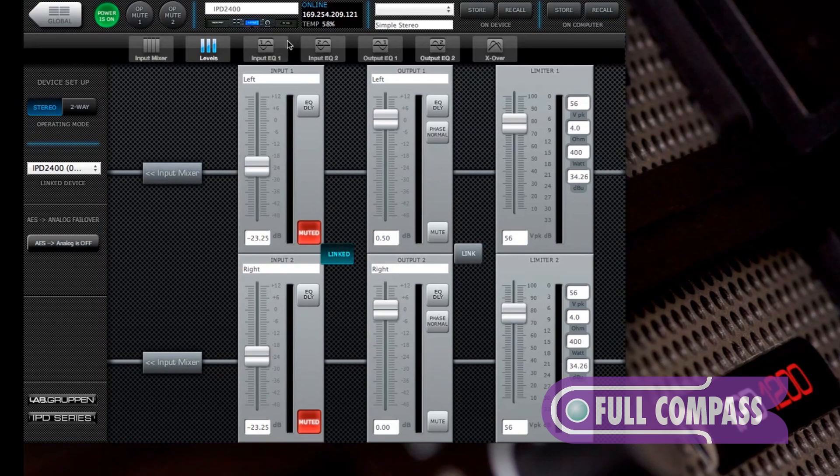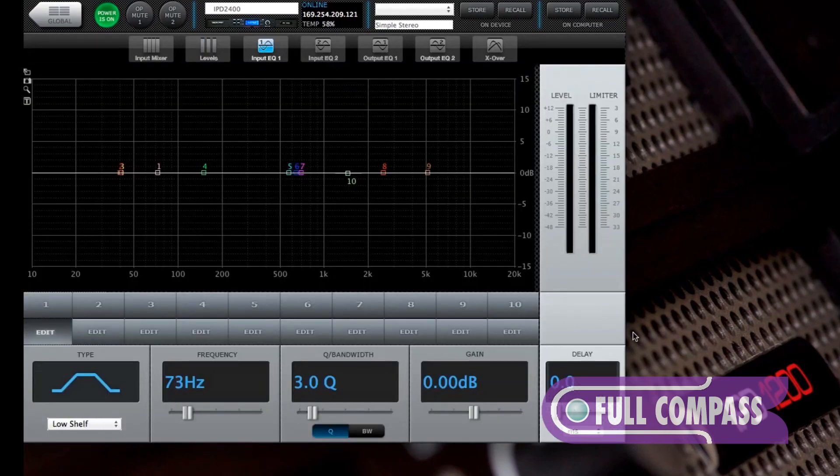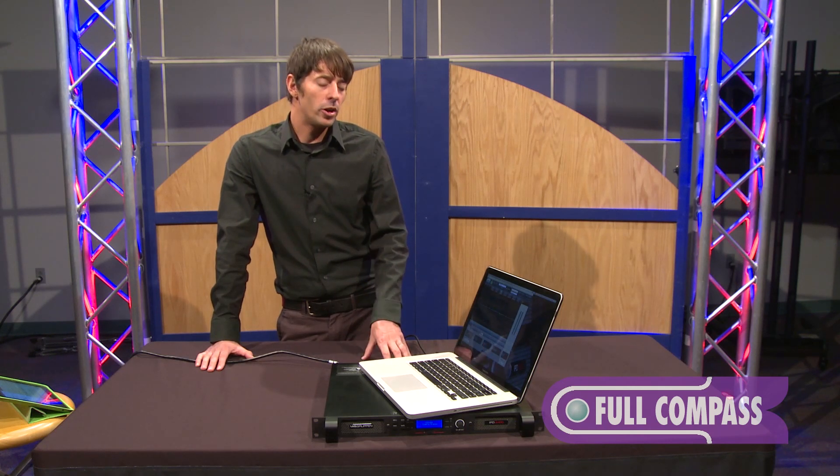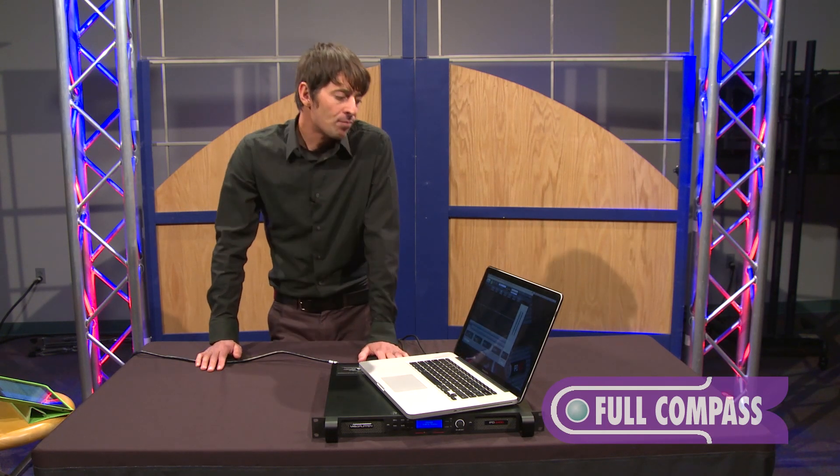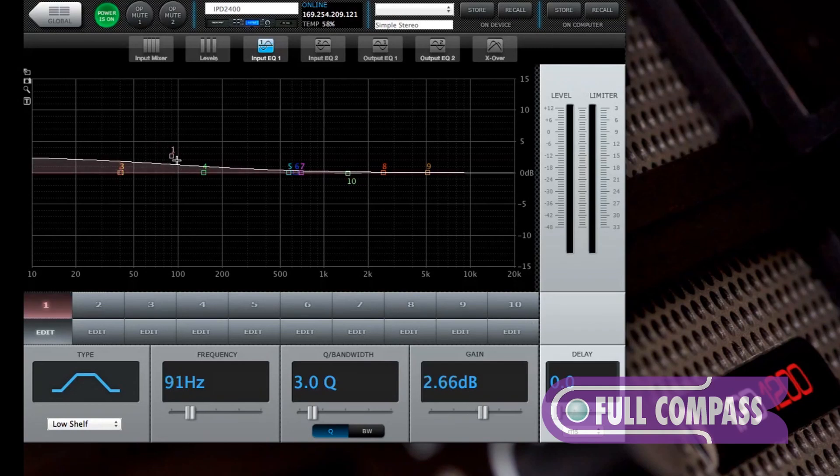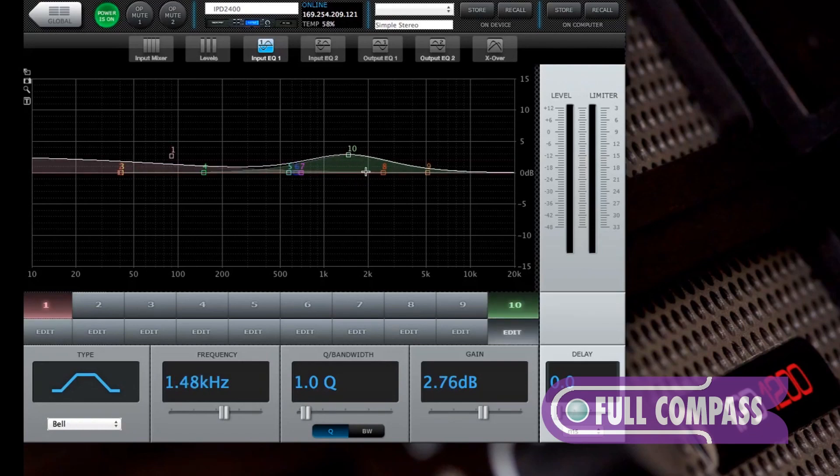Moving on to the EQ side of things, we have 40 multi-slope real-time adjustable parametric EQs. So 20 parametric EQs per channel. So this is a basic view of the parametric EQ. So that would be a typical shelving EQ and then here's a standard parametric EQ. You can, of course, adjust your EQ as well.